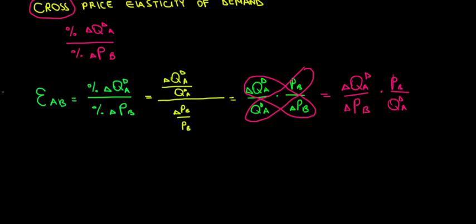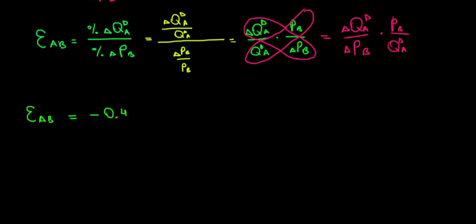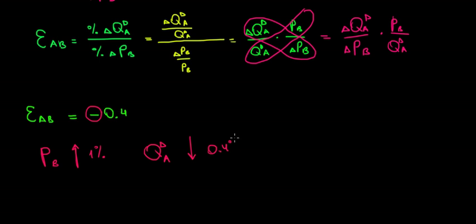This all looks abstract, but let's give two examples and see what kind of products we're talking about. What if this elasticity of A and B equals minus 0.4? That means that if the price of B increases by 1%, then the quantity demanded of good A decreases — because of the negative sign — by 0.4%.